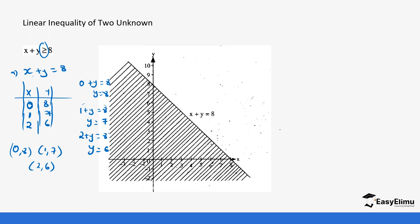Using these points you can draw the line. Since the inequality has a greater-than-or-equal sign, our line is going to be bold. Now we do not forget that x plus y is supposed to be greater than or equal to 8. What you do is pick values on the line, above the line, and below the line, and check which side is wanted or unwanted.